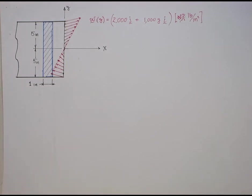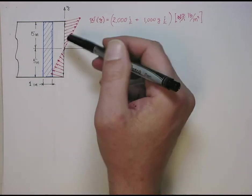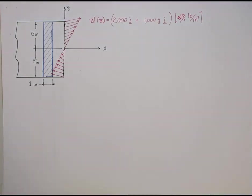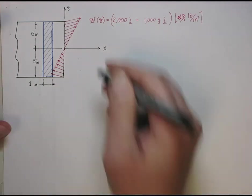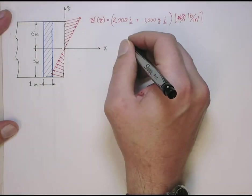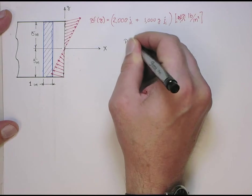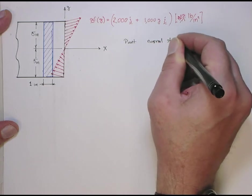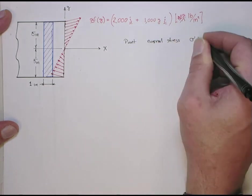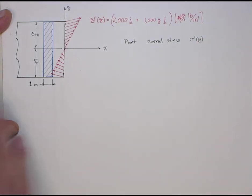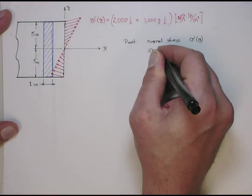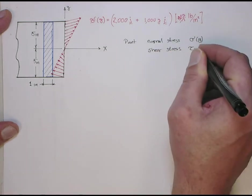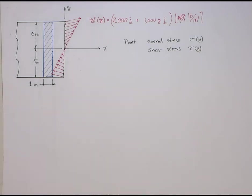Okay, so the first thing I want to do is talk about how this traction, this internal force distribution that actually, this is the one that I'm saying is actually in the part, how this relates to the stresses. So first we're going to compute the point normal stress, normal stress, it's too early in the morning. This is sigma, and it's actually going to be a function of position, in this case just y, and then also the shear stress, and that's going to be tau. It's also going to be a function of y.